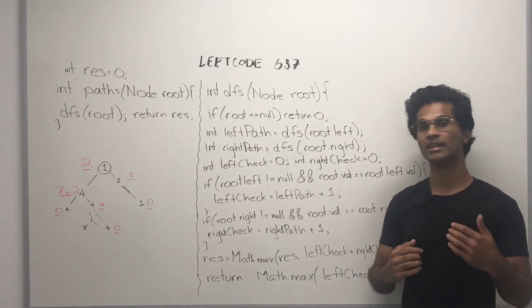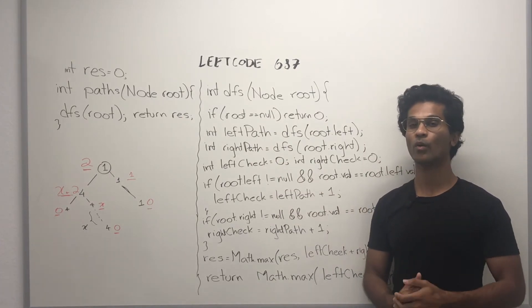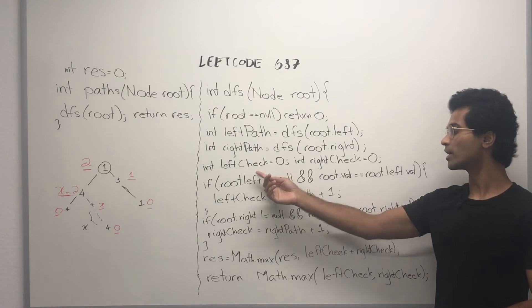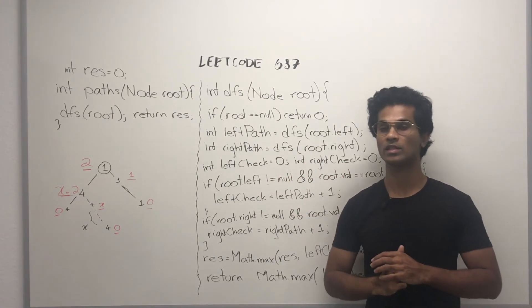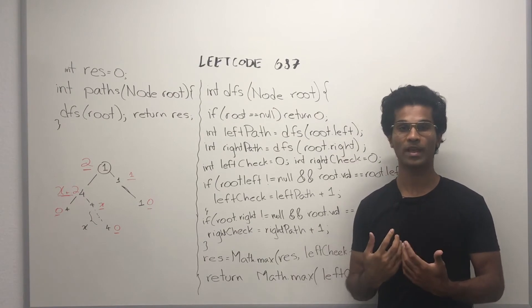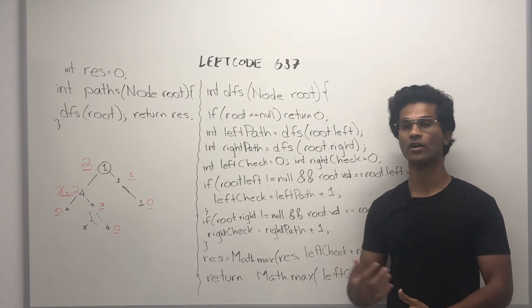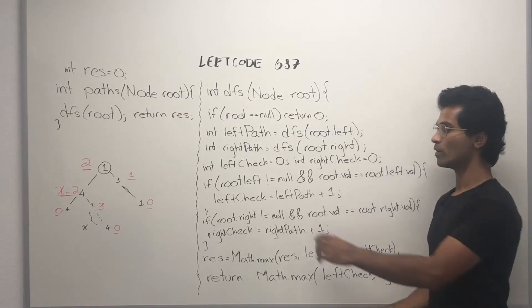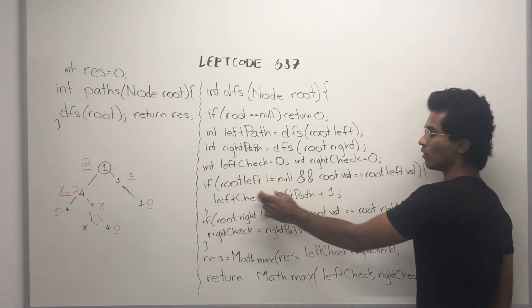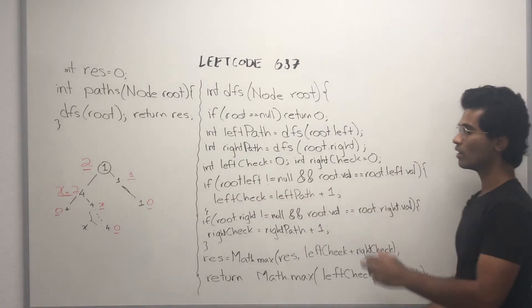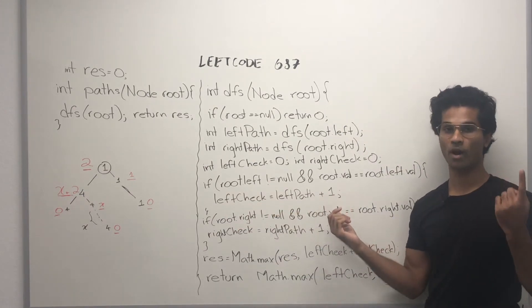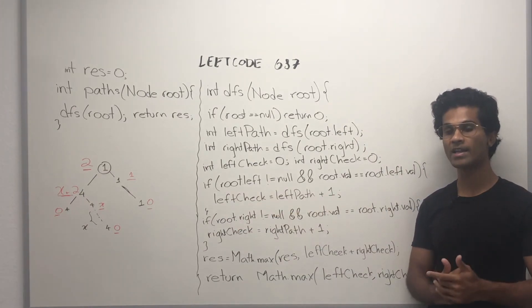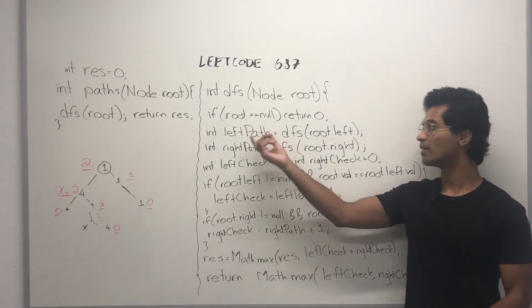Then at each node, we're going to initialize a left check and right check. These are going to be used to see if a node and its left child or right child are the same. So if the left is not null and if it's the same as the parent, we're going to take left check and increment it by 1 and we are going to add that to whatever left path returned.